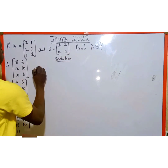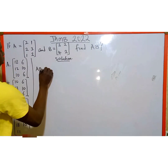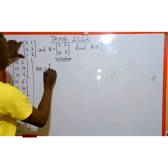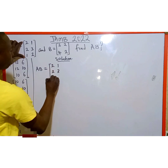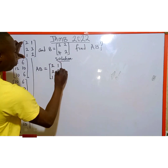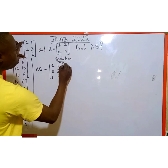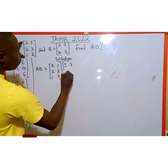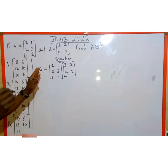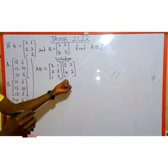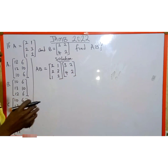We are asked to find the value of AB. Matrix A is given as 2, 1, 2, 3, and 1, 2. Then we multiply by matrix B, which is a 2 by 2 matrix: 3, 2, and 4, 2. The order of matrix A has 2 columns and 3 rows, and matrix B has 2 columns and 2 rows. So this is a 3 by 2 matrix and this is a 2 by 2 matrix.